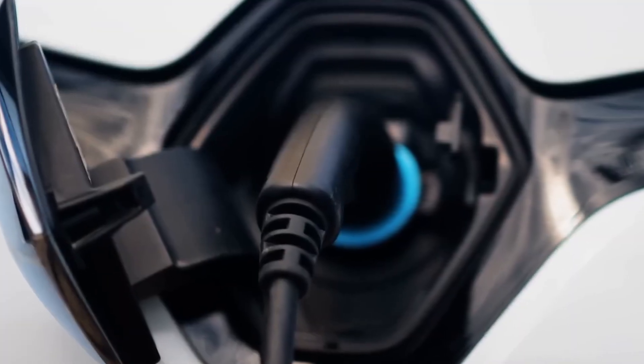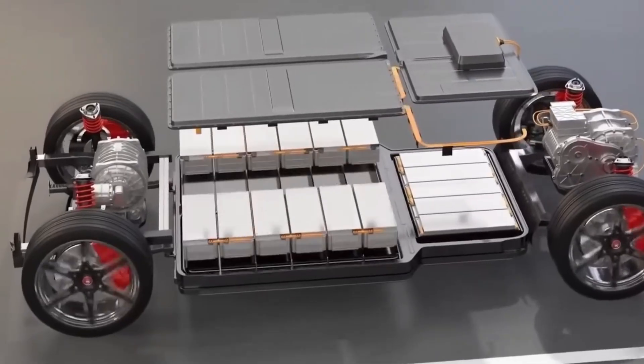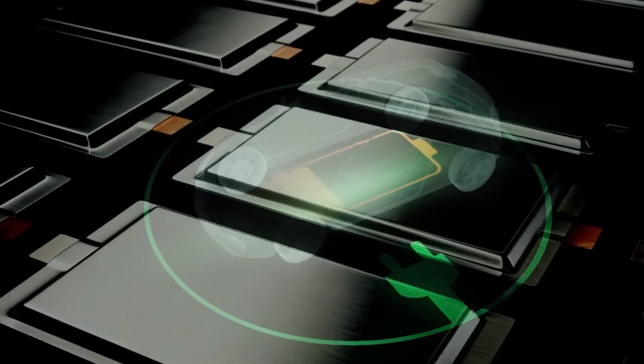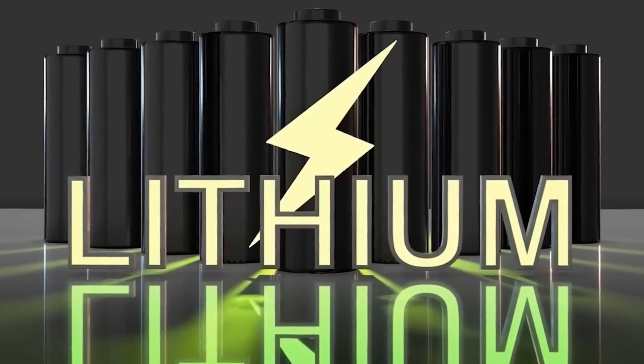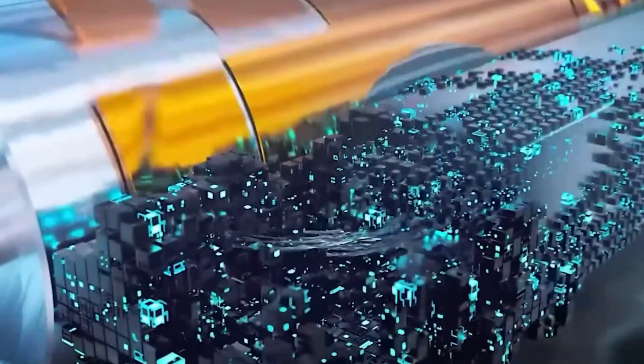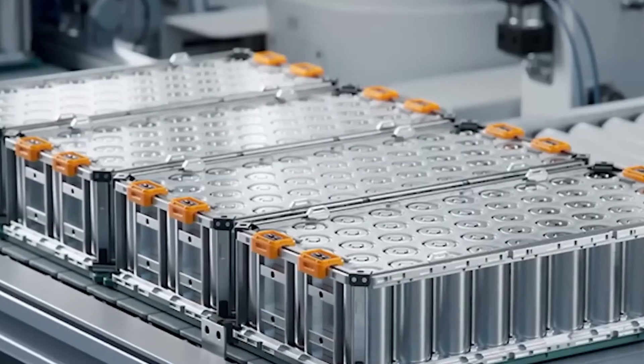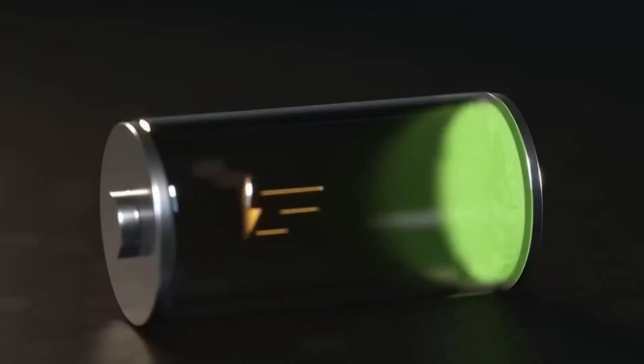Charging speed? Lithium needs nearly an hour for 80%. Aluminum-ion hits 100% in just 10 minutes without overheating. That's because aluminum-ions move three times faster and don't struggle with heat buildup.